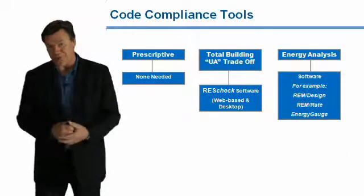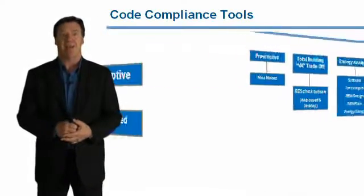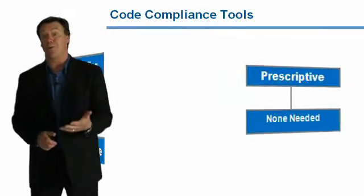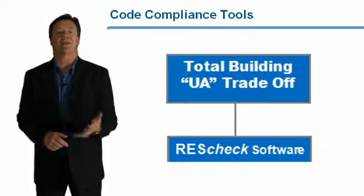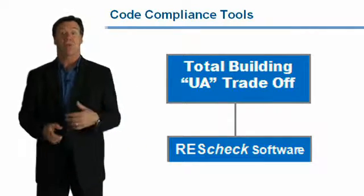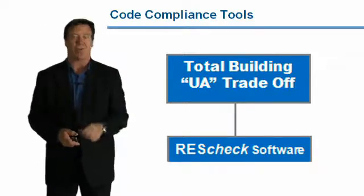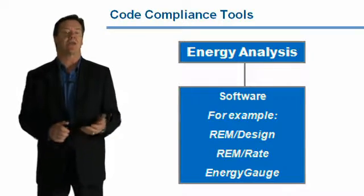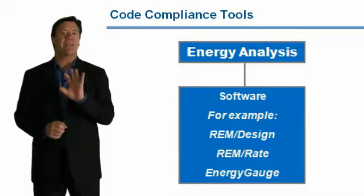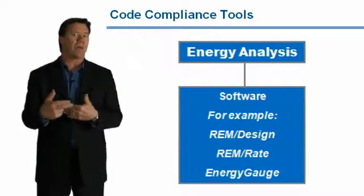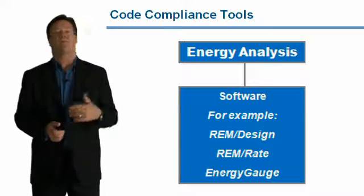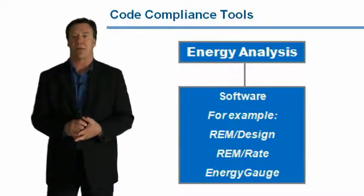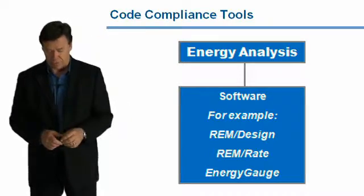With regards to the tools we use to help comply with the code: for the prescriptive method, there is none needed — we simply read the chart. But with the total building UA trade-off approach, you would use a compliance tool like ResCheck software, which is either web-based or available as a desktop download. The third compliance option is energy analysis, where we're actually simulating the performance of the building with a computer, using software such as REM Design, REM Rate, or Energy Gauge. These tools must be approved by the code official and by the code.